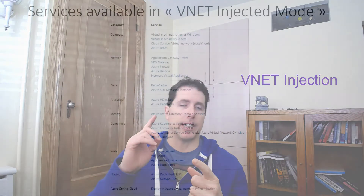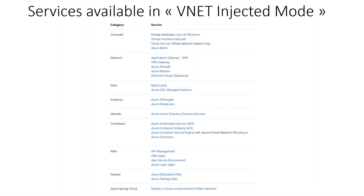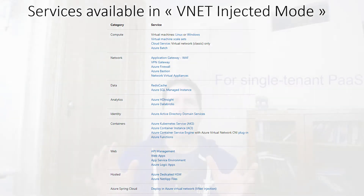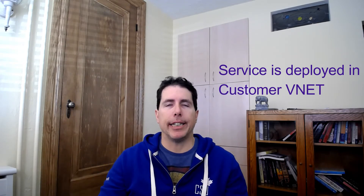Beyond that, most managed services are multi-tenant. Those that are not use something called VNet Injection. Some managed services such as Azure Kubernetes Services, Databricks, HD Insights, Application Gateways, Redis Cache, and SQL Managed Instances are single-tenant — the compute belongs to you. The way to integrate with a VNet is simply to place the VMs inside your own VNet, and then it runs like any VMs.